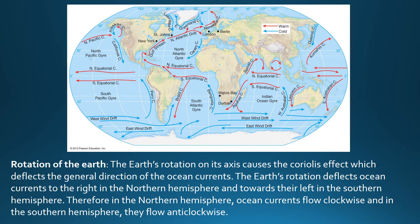The next factor is the rotation of the Earth. The Earth's rotation on its axis causes the Coriolis effect, which deflects the general direction of the ocean currents. The Earth's rotation deflects ocean currents to the right in the Northern Hemisphere and towards their left in the Southern Hemisphere. Therefore, in the Northern Hemisphere ocean currents flow clockwise, and in the Southern Hemisphere they flow anti-clockwise.